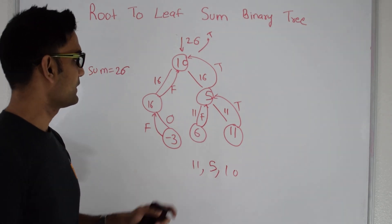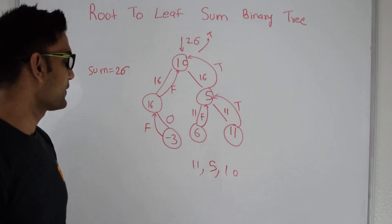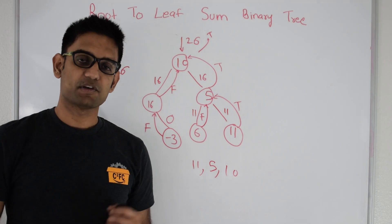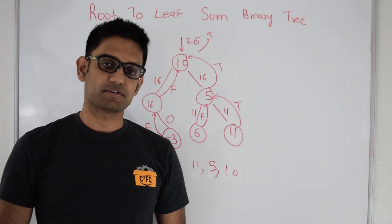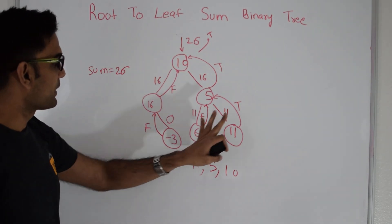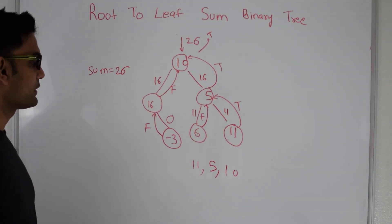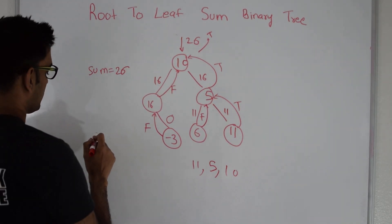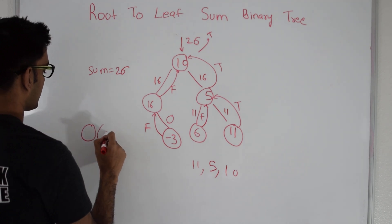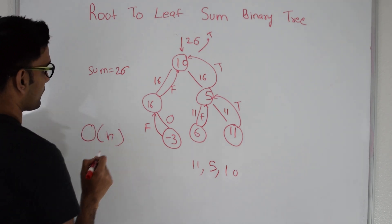The final result is 10, 5, and 11. The sum is 26 and the function returns true. Since we are looking at all the nodes, the total time to execute this is O(n).